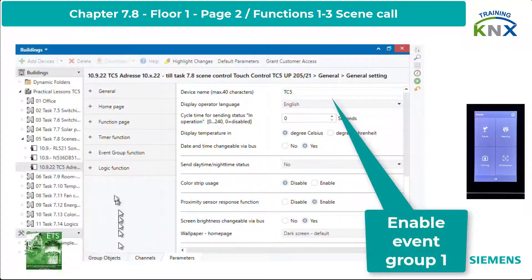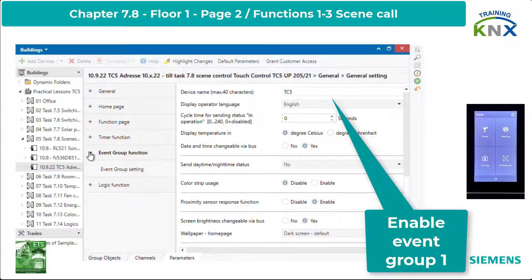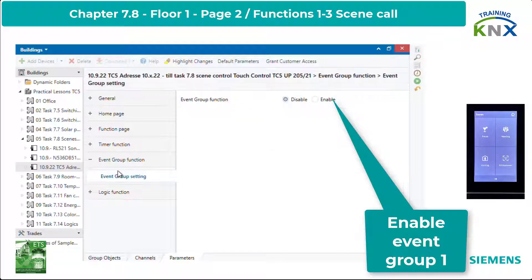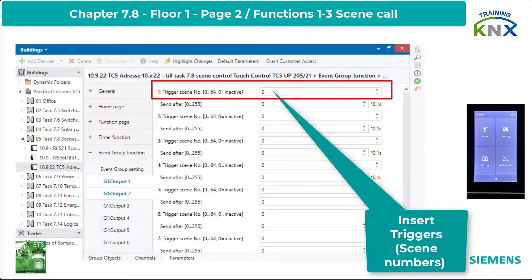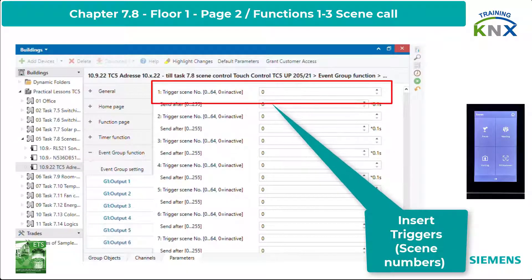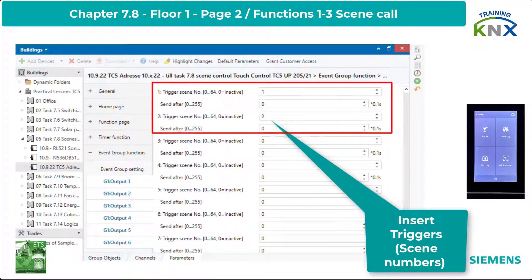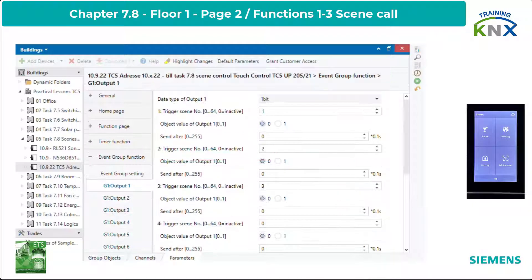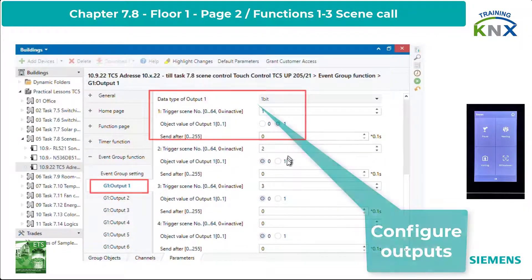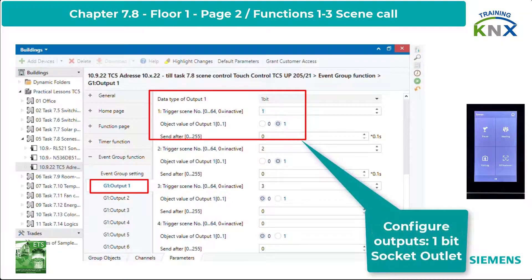First, we go to the parameter page, Event Group Function, in the TC5. There, we enable Event Group number 1. It is possible to set all triggers of outputs 1 to 6 together by selecting them all and then entering the values. Output 1 controls the Socket Outlet, so it's a 1-bit type.